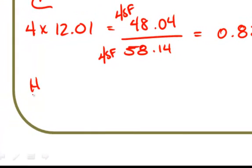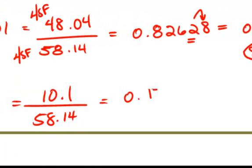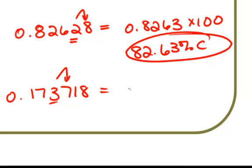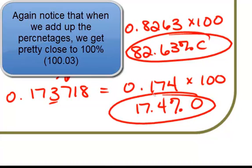Our hydrogen is 10 times 1.01, so 10.1 divided by 58.14. This gives me 0.173718. In this case, 10.1 has three significant figures and 58.14 has four. So we round to the smallest number — in this case it's the 3. We look to the right and the 7 tells the 3 to become a 4. So I have 0.174. I multiply this number by 100 and I get 17.4% as a result of hydrogen.